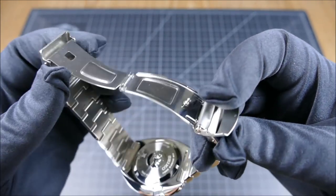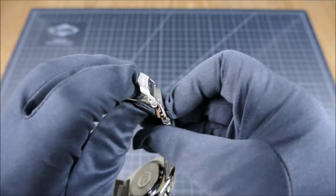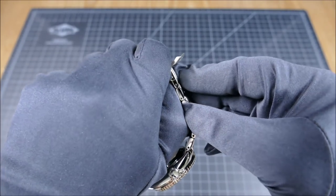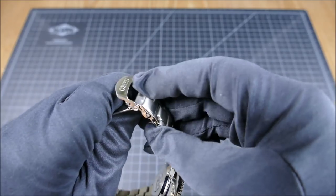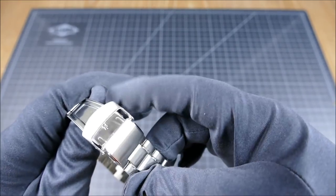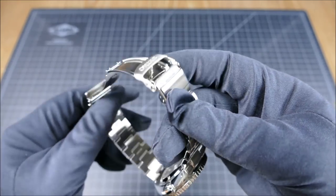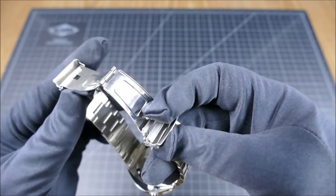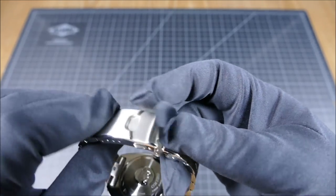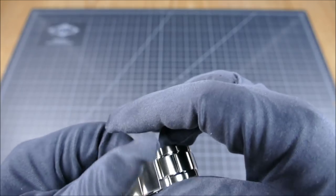As you can see, we have the signed Seiko clasp, it's stamped, fold-over push button, and then also has that nice little diver's extension which is a little hard to pop off with the gloves on.